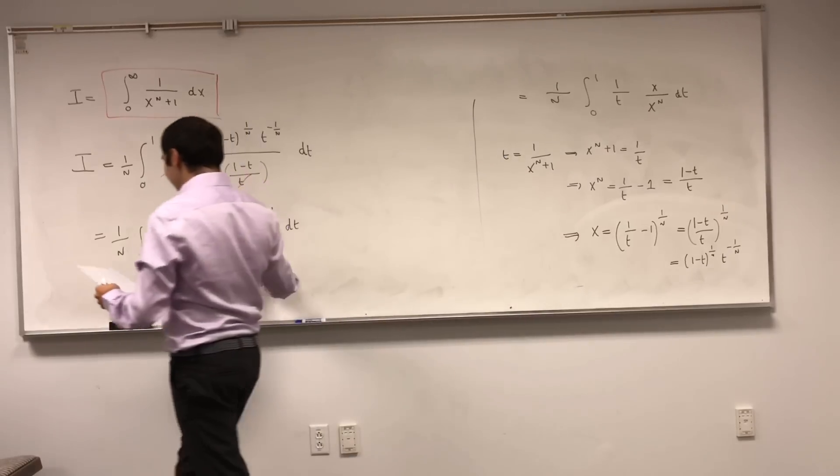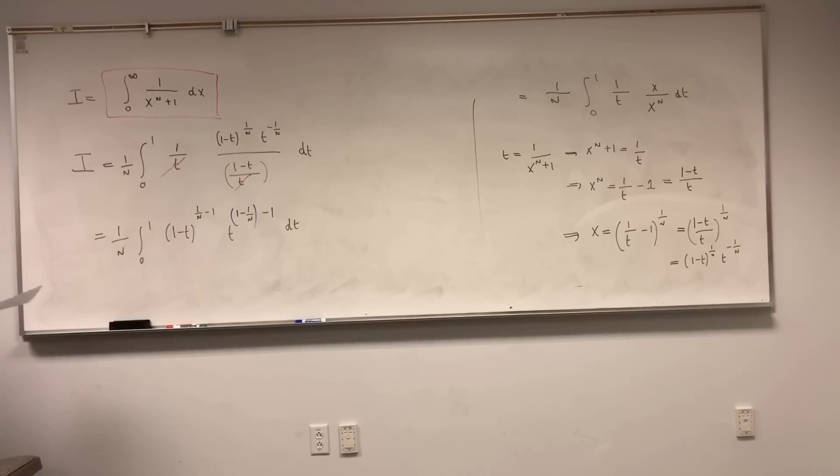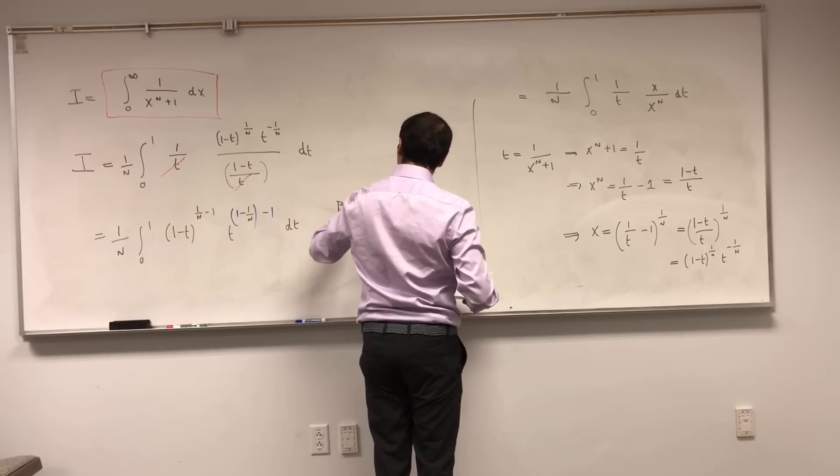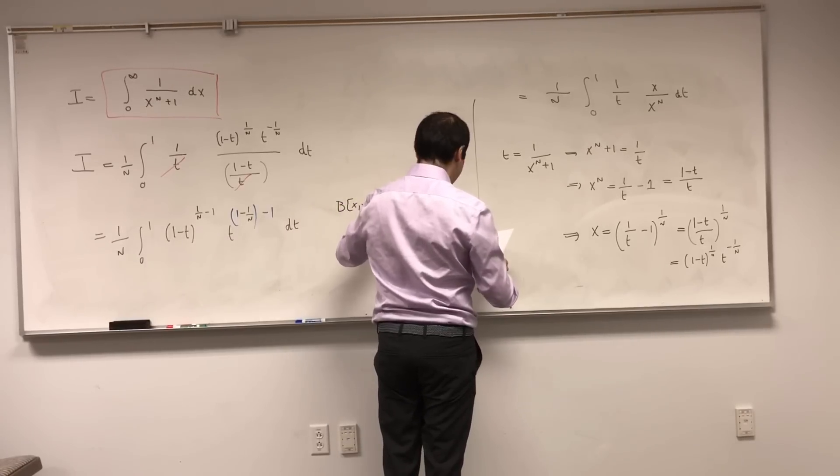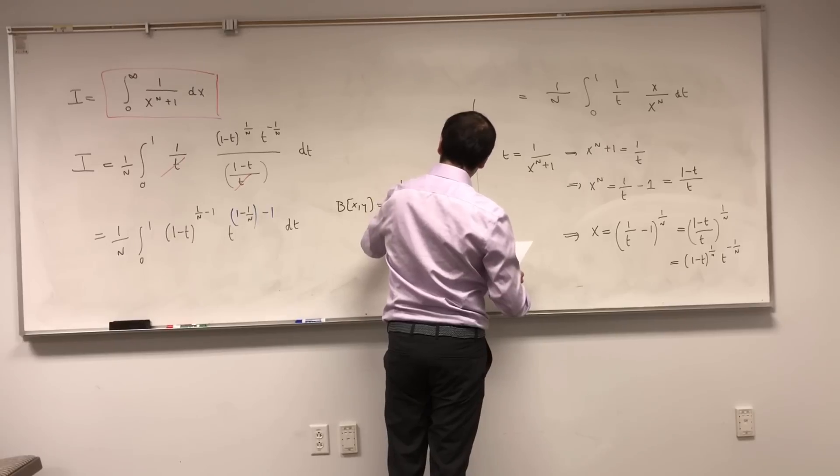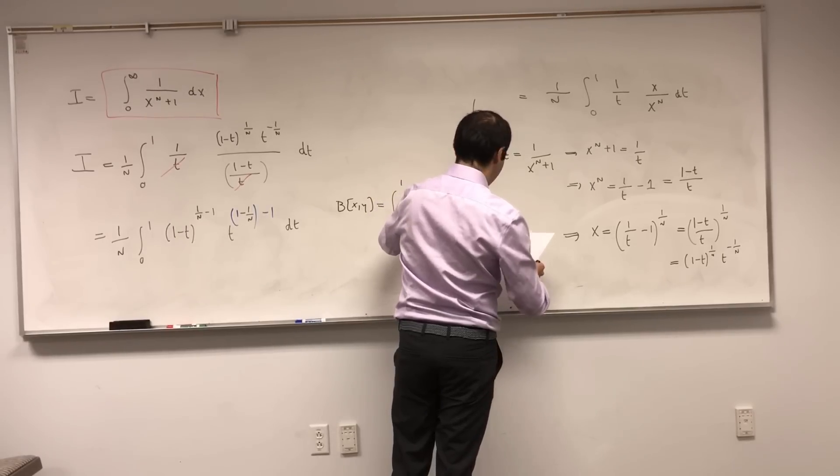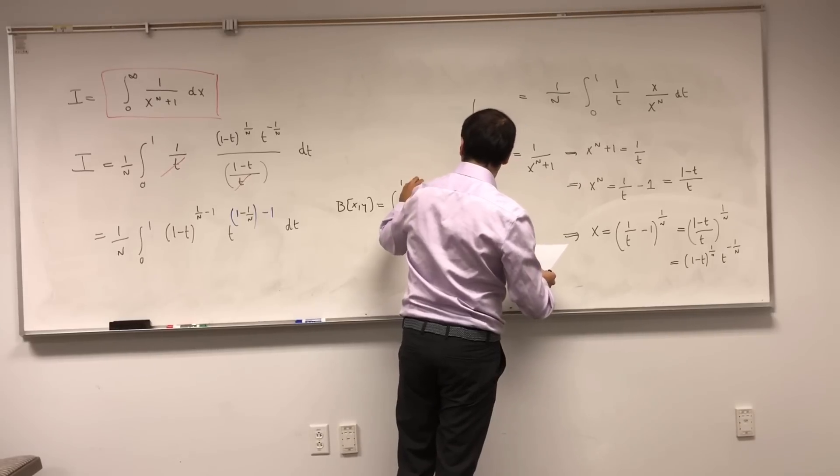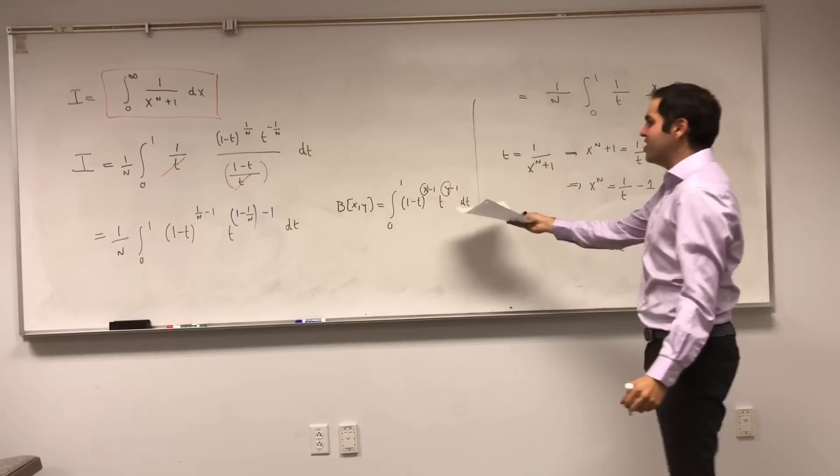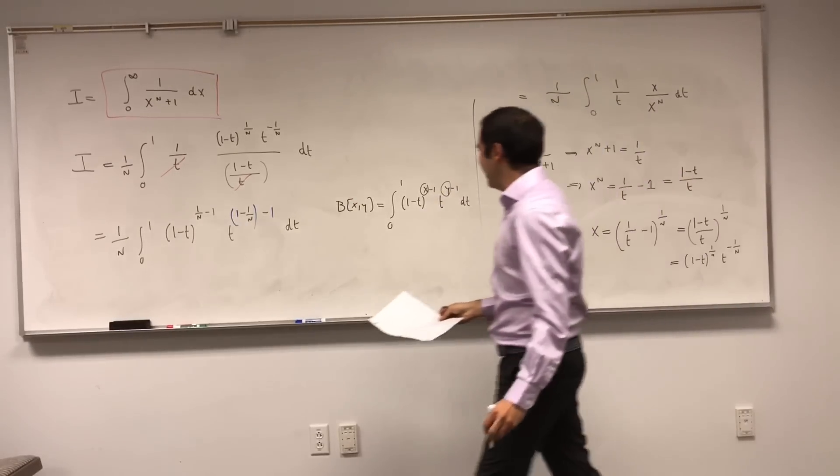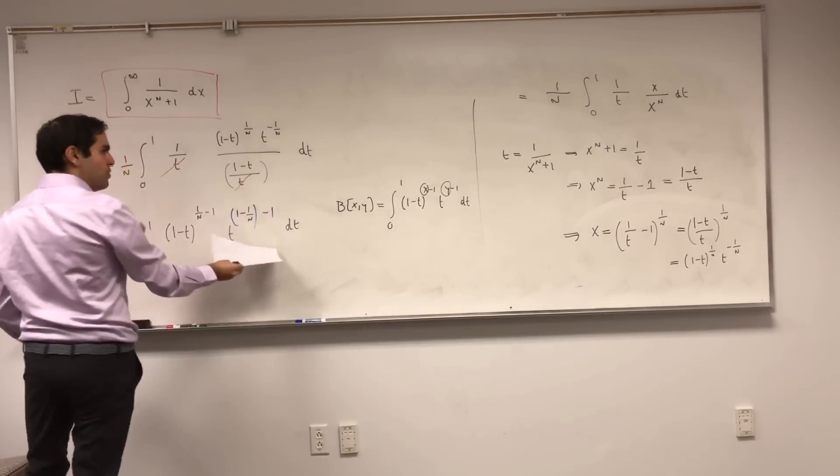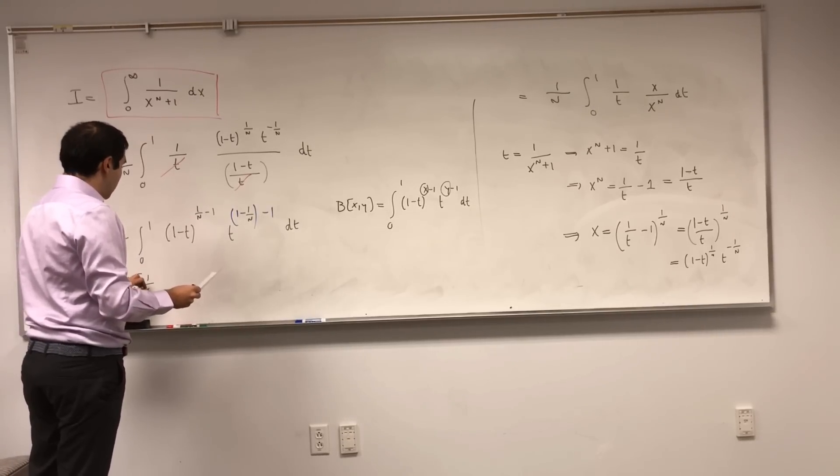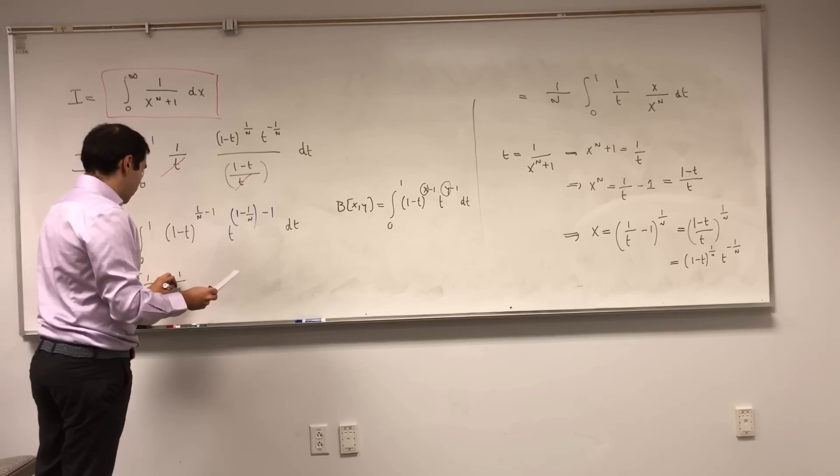And here's the nice thing, and here's why I did that. It turns out you can write this integral in terms of a much more known function, which is called the beta function. Beta of x, y is defined to be the integral from 0 to 1 of 1 minus t to the x minus 1 and t to the y minus 1 dt. I know there are many formulations of this, but this is an equivalent formulation, and that's precisely what we have here, but with 1 over n, so beta of 1 over n and 1 minus 1 over n.